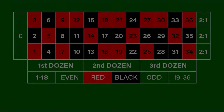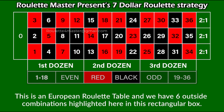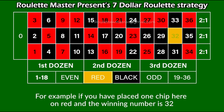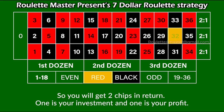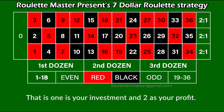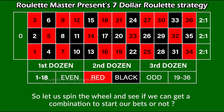Let me take you to a European roulette table and explain how to use this trick in real. This is a European roulette table and we have six outside combinations highlighted here. You get only one chip extra on winning any of these bets — for example, if you place one chip on red and the winning number is 32, you get two chips in return. On winning a dozen or column bet, you get three chips in return. There are three dozens and three columns on any roulette table.